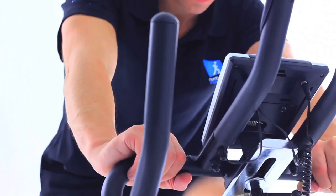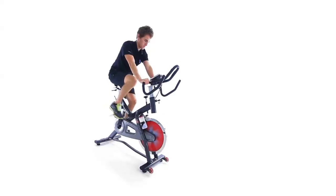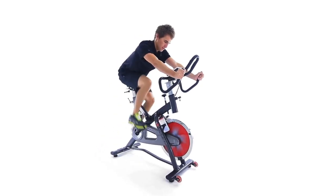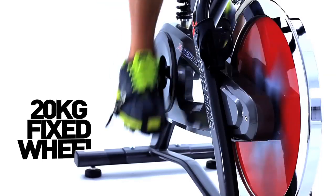Cycle your way into better fitness and achieve those goals with the Extreme Spin Bike from Number One Fitness, featuring a large 20kg flywheel driven quietly by a chain fixed wheel transmission.